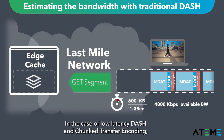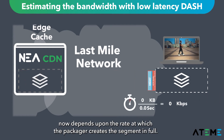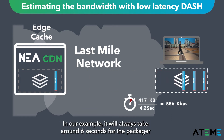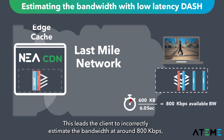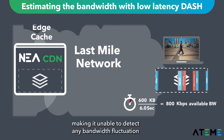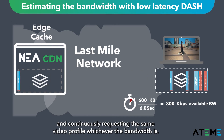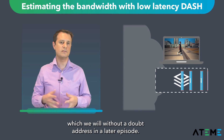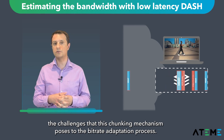In the case of Low Latency DASH and Chunk Transfer Encoding, the elapsed time between the first and the last byte received now depends upon the rate at which the packager creates the segment in full. In our example, it will always take around 6 seconds for the packager to transmit the full segment and for the client to receive it. This leads the client to incorrectly estimate the bandwidth at around 800 KBps, making it unable to detect any bandwidth fluctuation and continuously requesting the same video profile regardless of bandwidth. Solutions are being researched, but it is important to understand the challenges that this chunking mechanism poses to the bitrate adaptation process.